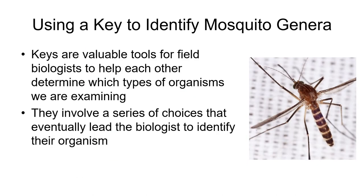Now that we know how life is organized, I'm going to walk through how to use a key in order to identify the genera of mosquitoes in your samples. Keys are used by field biologists all the time to identify different types of organisms. They're usually written by experts and are basically a guide to help non-experts determine which species they have in front of them. They work as a set of choices — a little like a choose your own adventure — that will lead a researcher down a path to identify what they have.